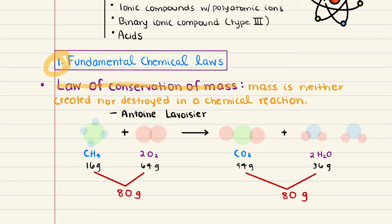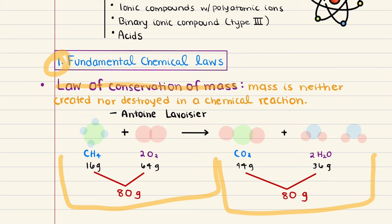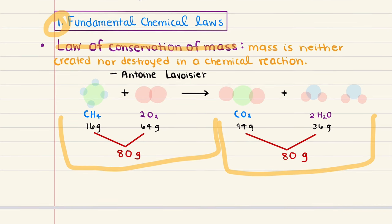Conservation of mass essentially states that in a closed system, the total mass of the reactants — the substances that start a chemical reaction — equals the total mass of the products, the substances formed by the reaction. In simple terms, mass is neither created nor destroyed; in chemical reactions, it is simply transformed. For example, methane CH4 reacts with oxygen gas O2 to form carbon dioxide CO2 and water H2O.